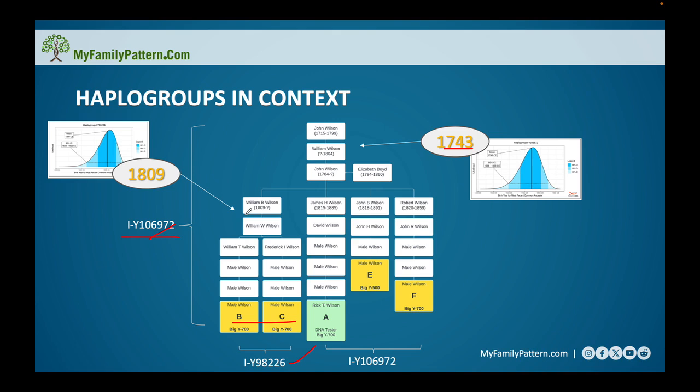I only knew at the point of when I recruited these members up to this point, William W. Wilson down. This did not even exist in my family tree, but yet they predicted 1809.